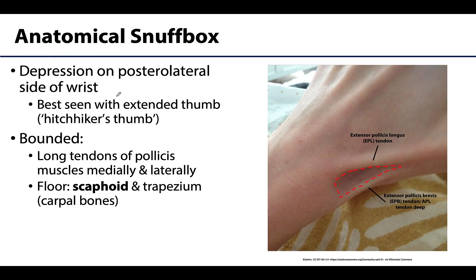The anatomical snuff box is a depression on the posterior lateral side of the wrist, and it's most noticeable when you extend your thumb or jut it out laterally — often referred to as a hitchhiker's thumb.